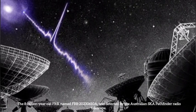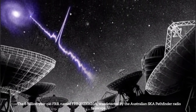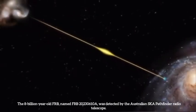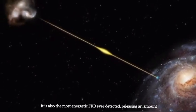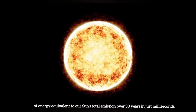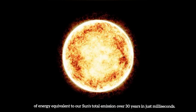The 8-billion-year-old FRB, named FRB-20230610A, was detected by the Australian SKA Pathfinder radio telescope. It is also the most energetic FRB ever detected, releasing an amount of energy equivalent to our sun's total emission over 30 years in just milliseconds.